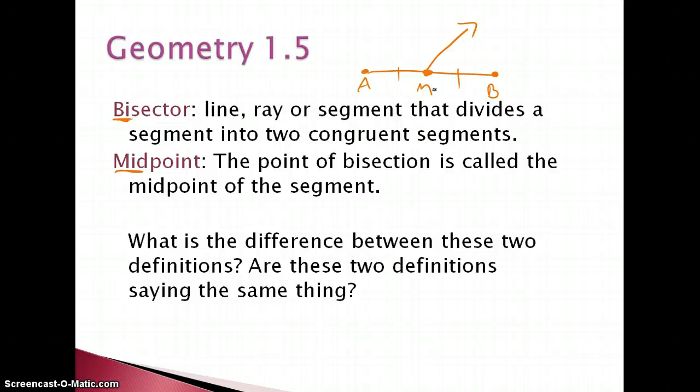So what's the difference between these two definitions? Are they saying the same thing? The bisector is what actually does the bisecting. The midpoint is just a point. Bisectors can be a line, ray, or segment that does the dividing, and midpoints are just that location where that segment is being divided.